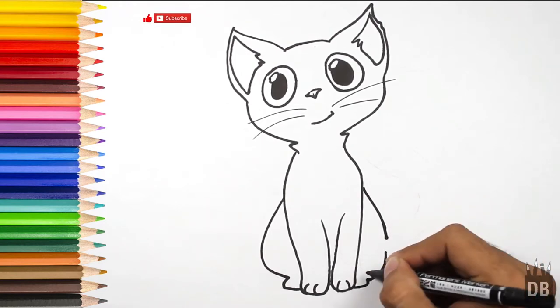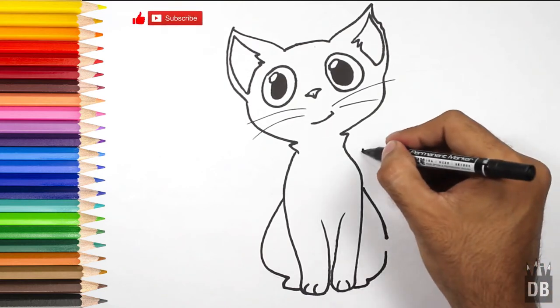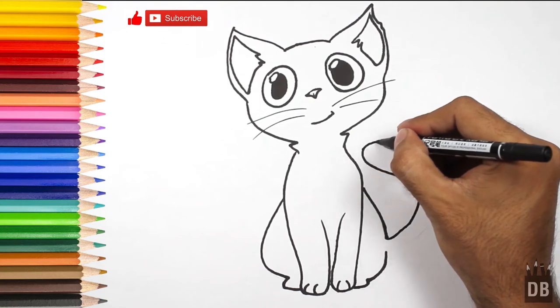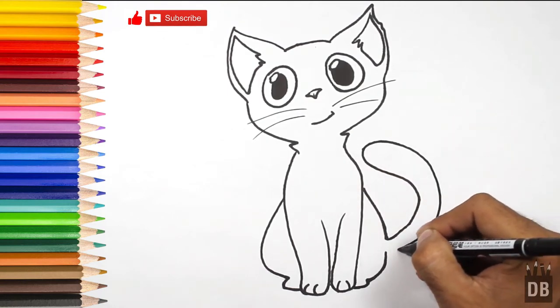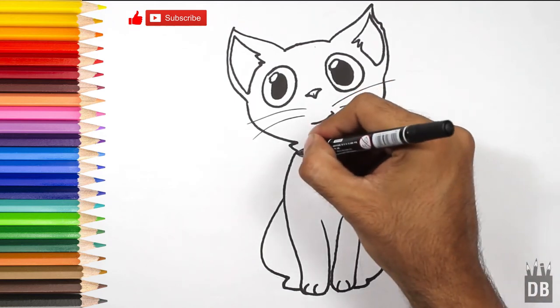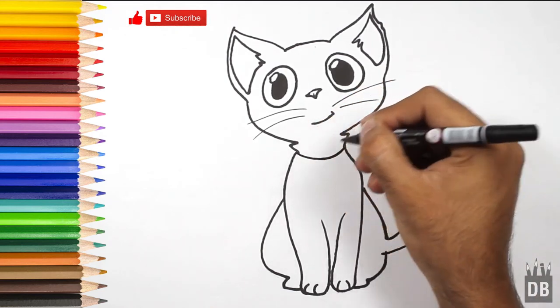And now his tail. You can use any design for the tail as you want, and make a bell over here.